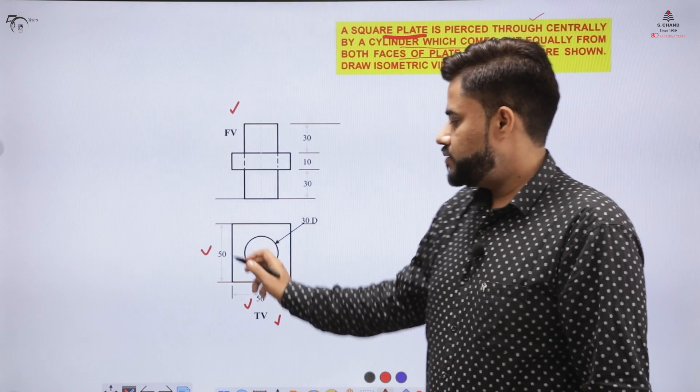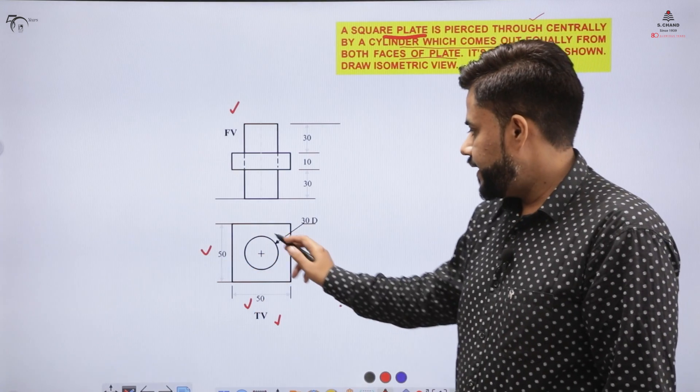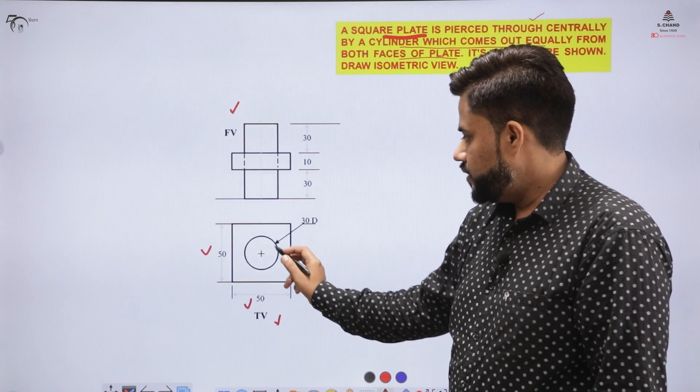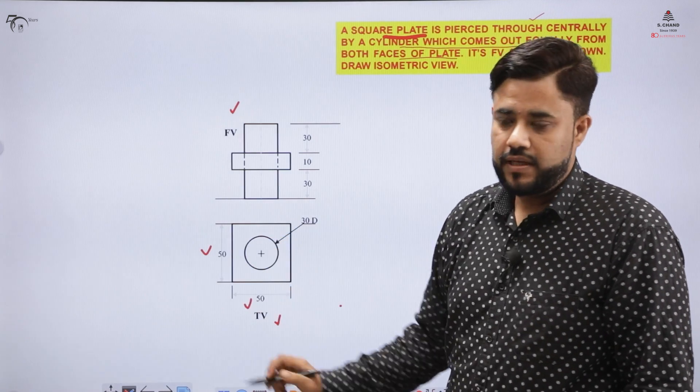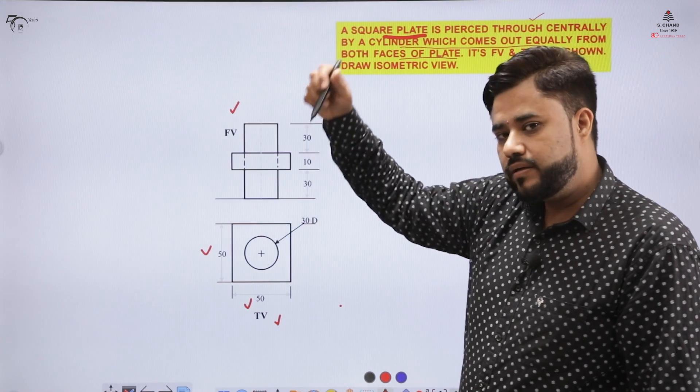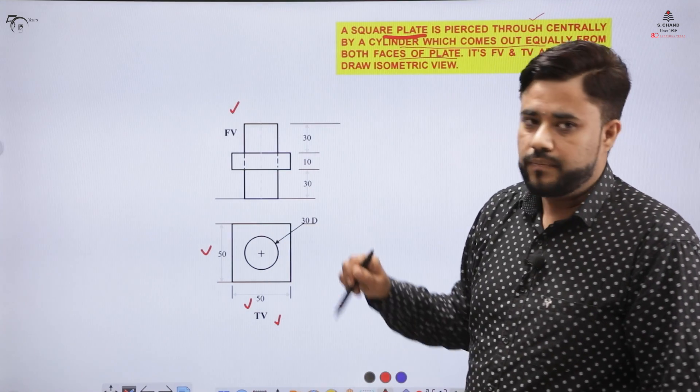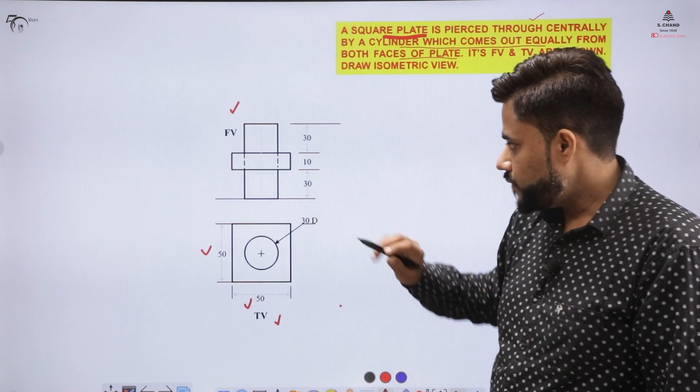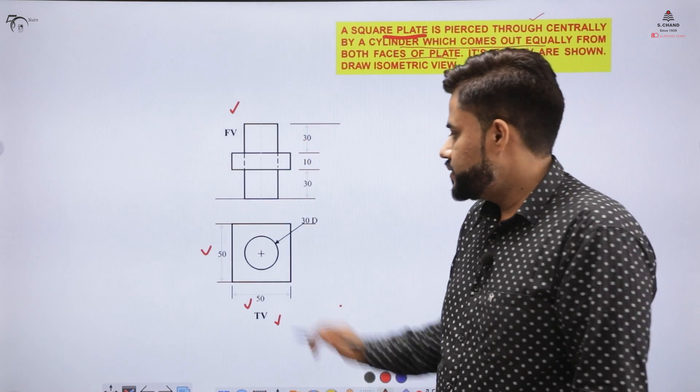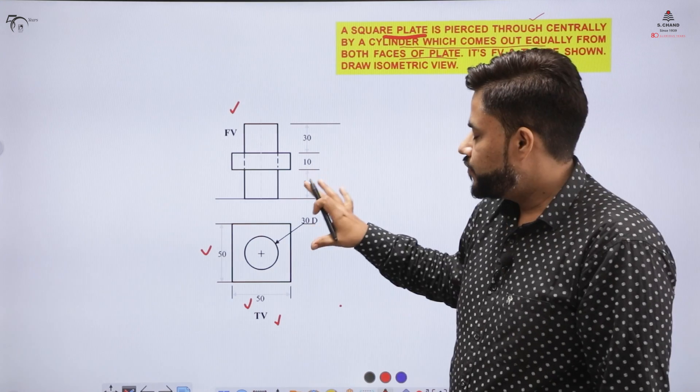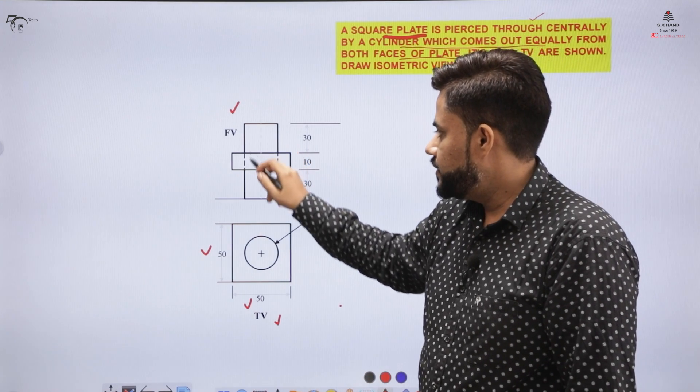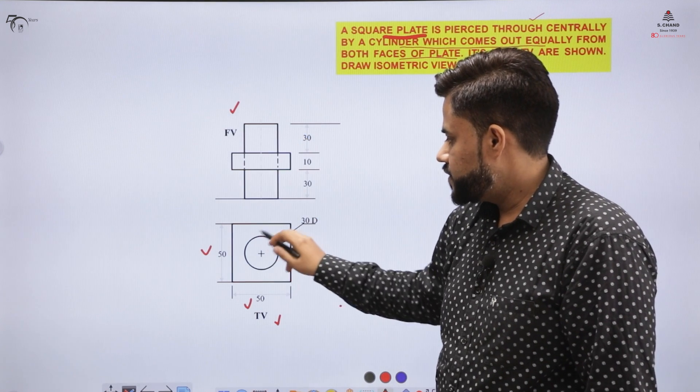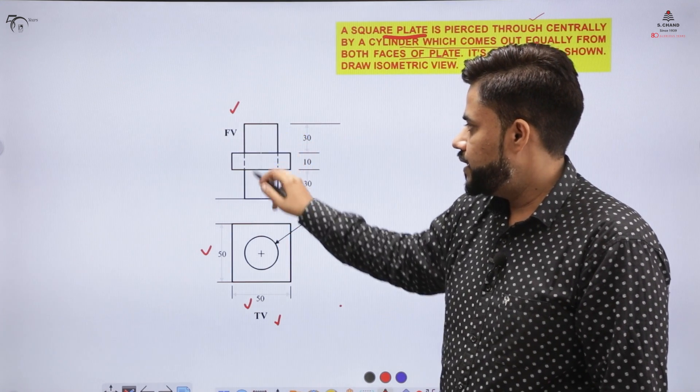The square plate is of size 50 by 50 and inside there is a circle of diameter 30. The circle is centrally placed inside the square plate and I am looking at the same from the top. Now if I look at the same part from the front I will get a rectangle which depicts this circle. So therefore it is a cylinder.